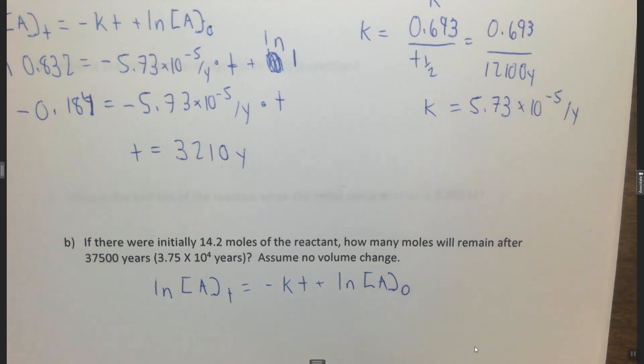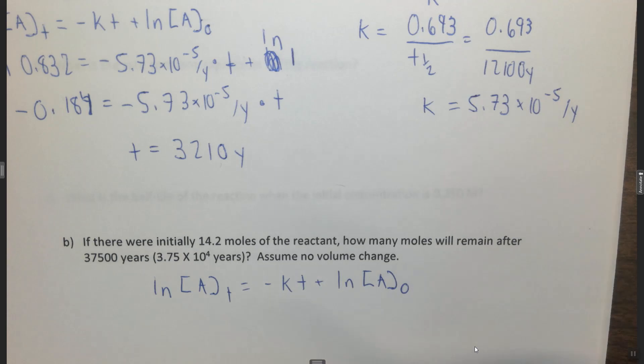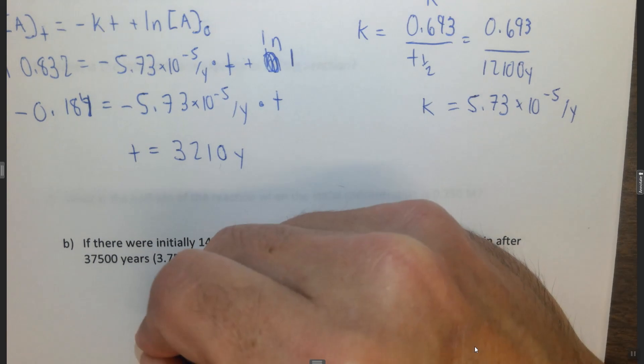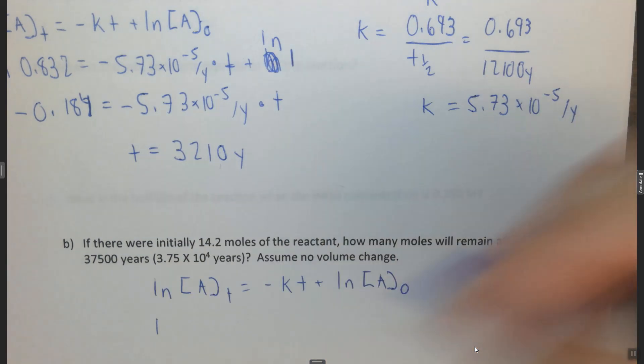In this case what we want to find is the number of moles remaining. We're going to use moles instead of concentration because there is no volume change. If we use moles here and moles here, the concentrations and the moles will be proportional because the volume is the same.